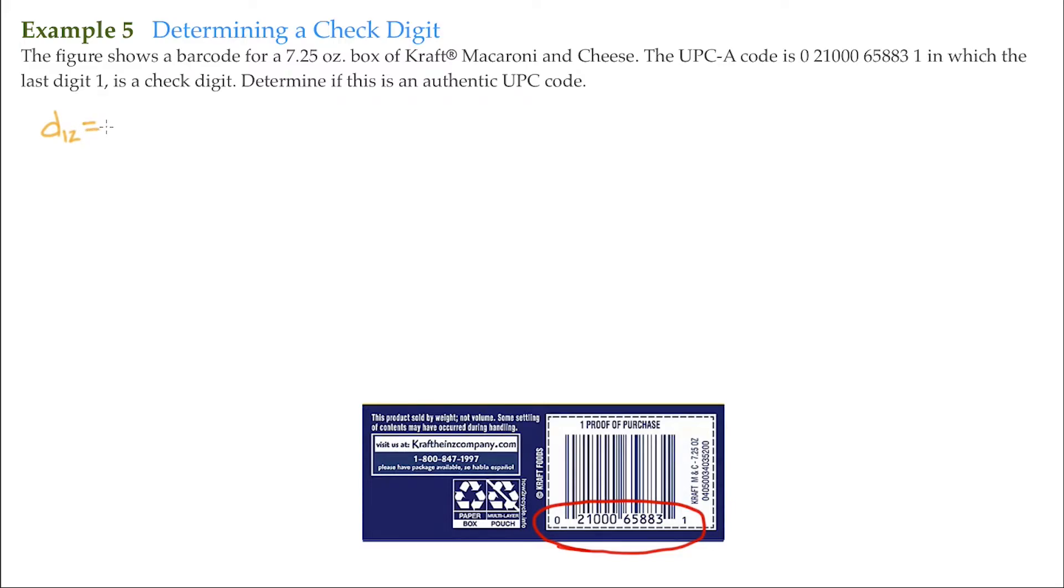It's going to be equal to negative 3 times the first digit plus the second digit. That's what these subscripts mean. Plus 3 times the third digit plus the fourth digit plus 3 times the fifth digit plus the sixth digit.